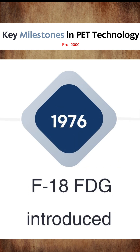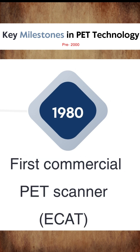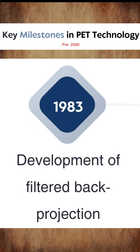In 1973, the first dedicated PET scanners were introduced. In 1976, the F-18 labelled FDG was introduced. In 1977, the first whole body PET scanner came, and in 1980 the first commercial PET scanner came, which was called emission computed tomography.